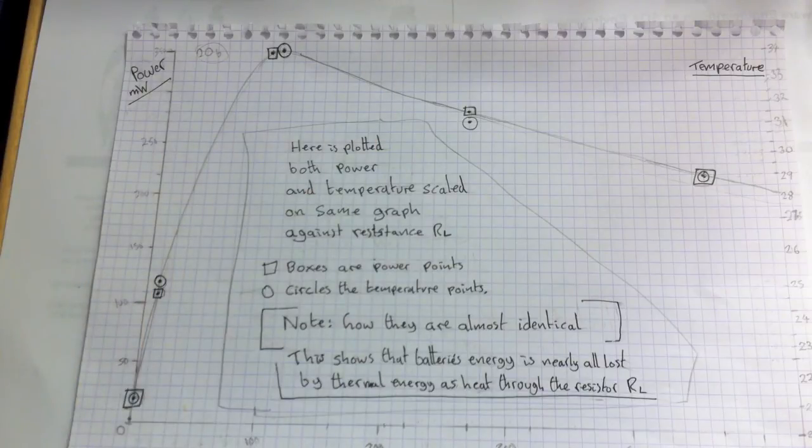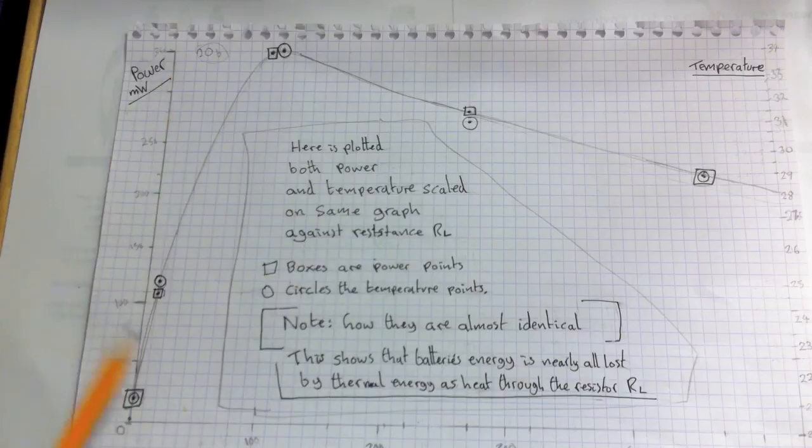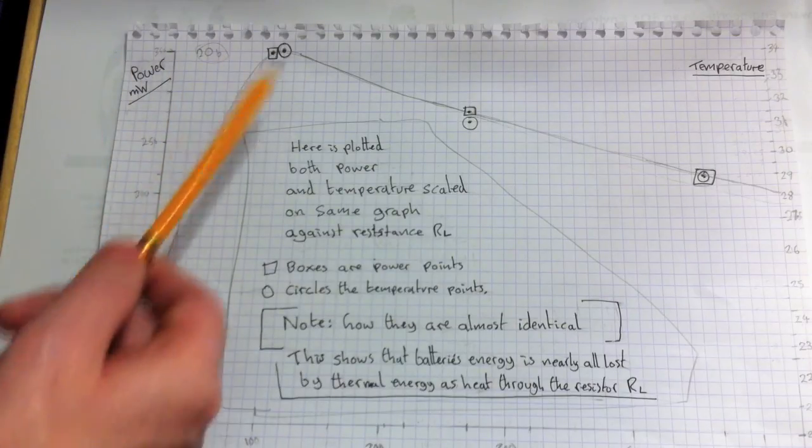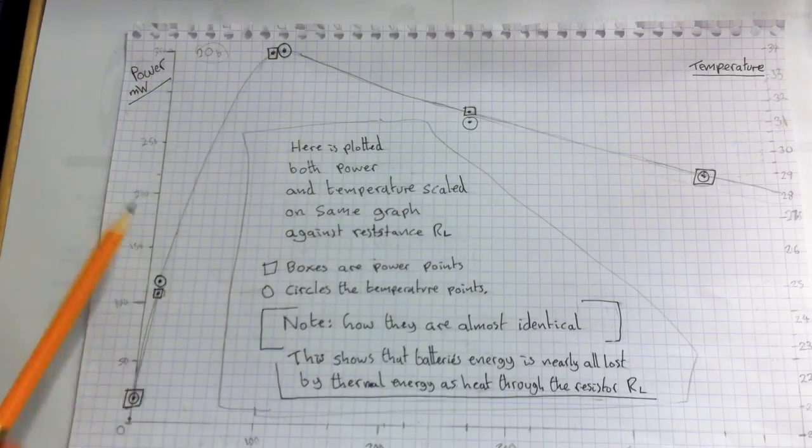So we've proved here the maximum power theorem. Also, we've proved quite nicely that the energy from the battery definitely is used up by the resistor as heat. So that's what I wanted to try and show you.